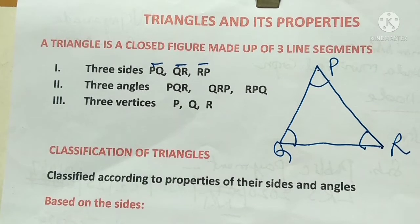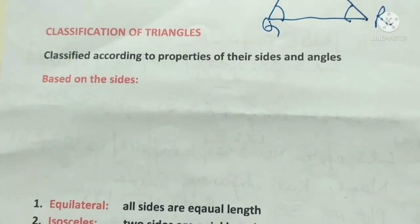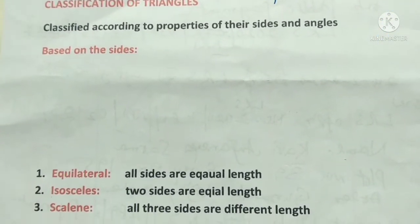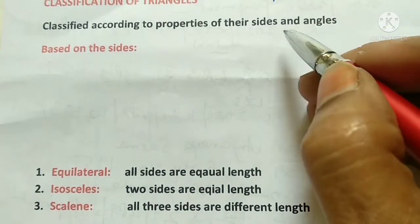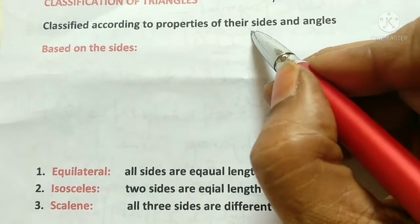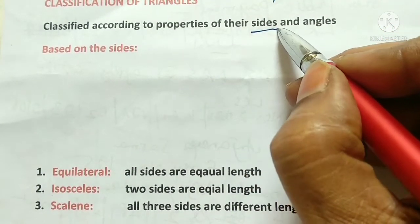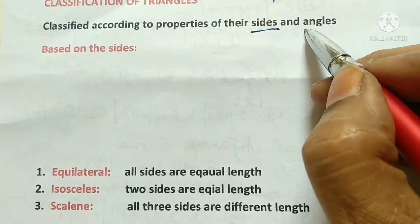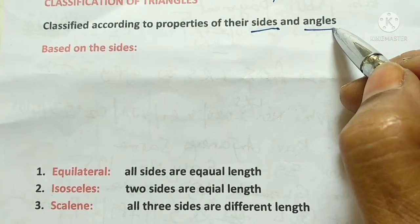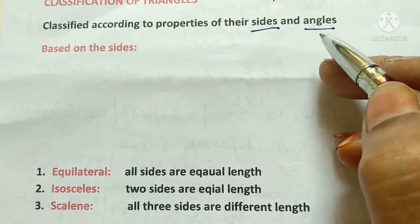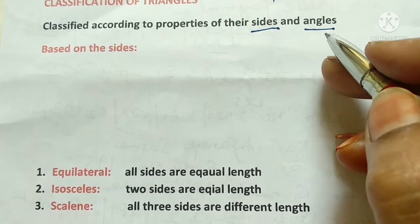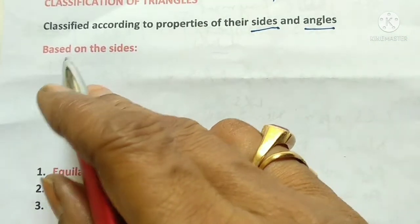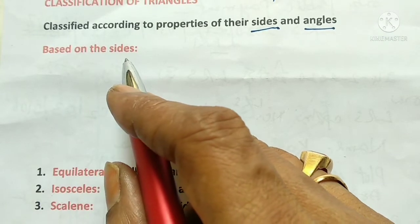Now we will do classification of triangles. Classification of triangles is done in two ways — based on the equivalence of the sides and based on the angles. The first classification is based on their sides.